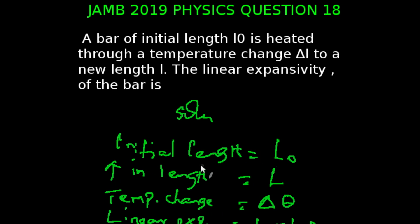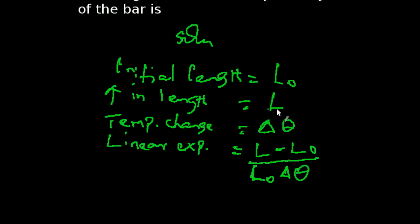And in this question, we are given our initial length to be L subscript 0, our increase in length is L, and our temperature change is delta theta. So our linear expansivity will simply be the increase in length minus initial length, all over initial length multiplied by change in temperature.